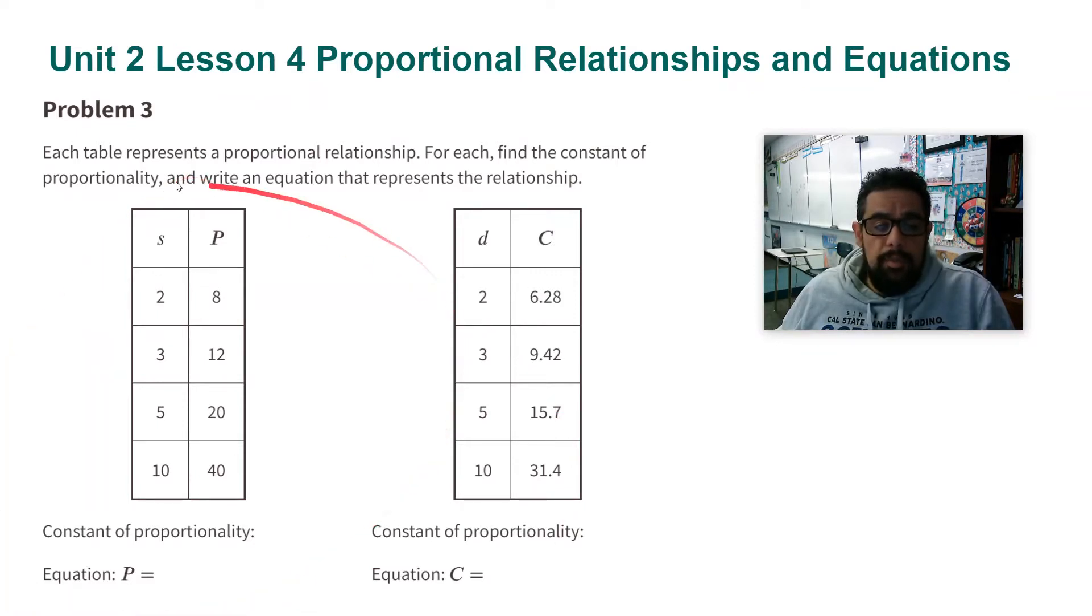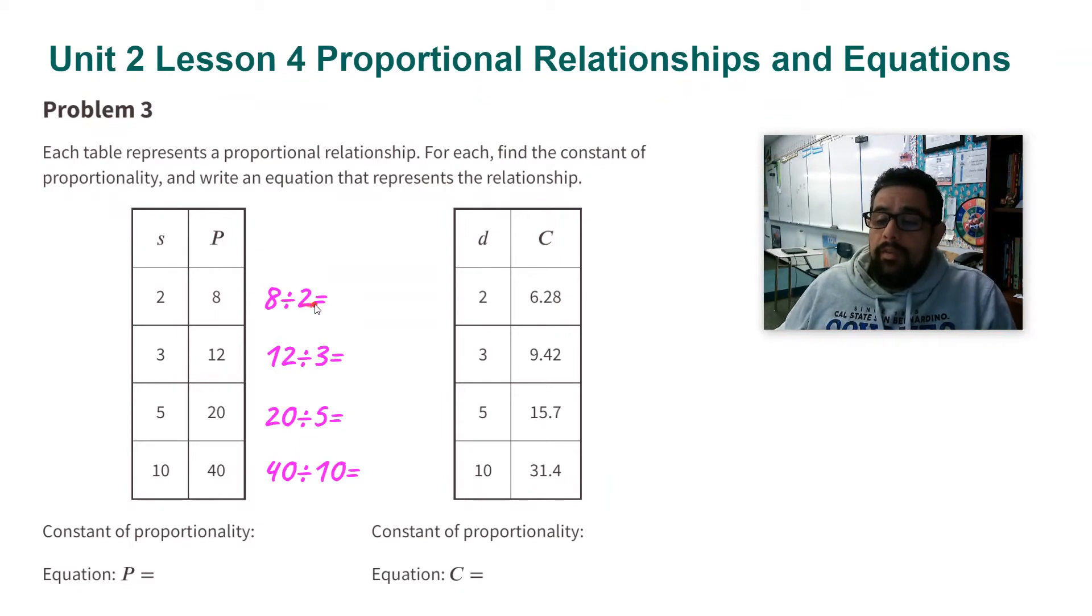So we'll start with this first table here. To find the constant of proportionality, I need to figure out what every row is being multiplied. What I'm going to do, and you really only have to do this one time, but I'm doing it with all of them so you can see that we get the same number.